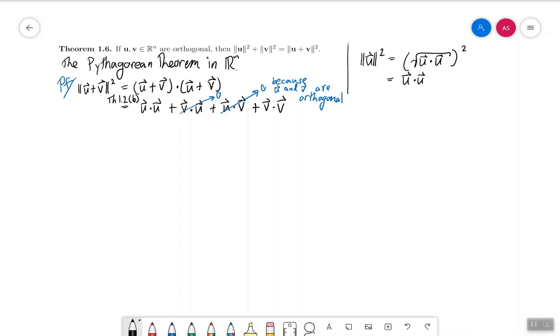So, using what I have on the right again to turn u dot u into the norm of u squared and v dot v into the norm of v squared, I get the norm of u squared plus the norm of v squared, which is exactly what I wanted. And this is the proof of the theorem.